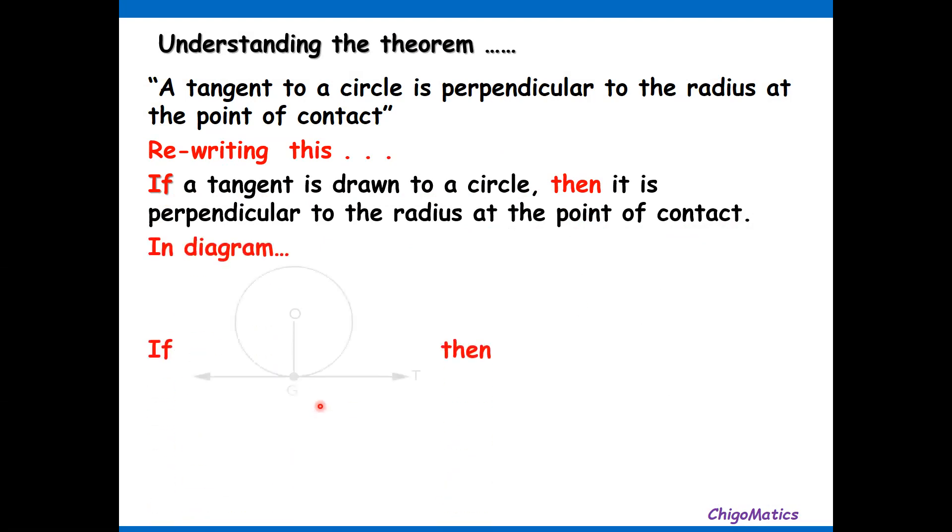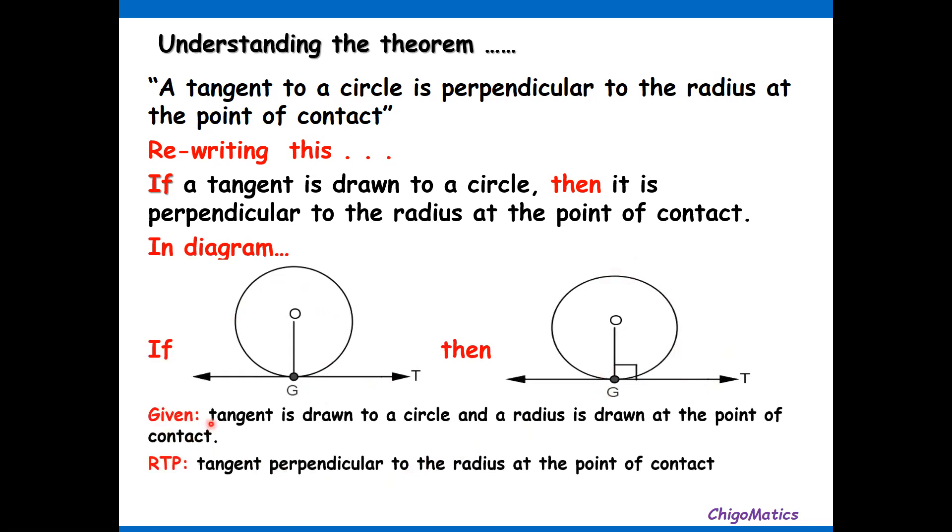In diagram form, this is our hypothesis and this is our conclusion. So the given represents the hypothesis. The required to prove represents the conclusion.